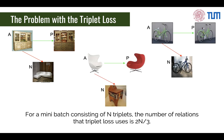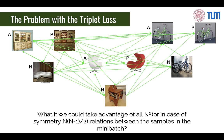When we generalize to n triplets, we see that the number of relations is 2n divided by 3. This is a bit problematic, because not all the information in the mini-batch is being used. In fact, in order to train a network with triplet loss, researchers need to consider things like doing intelligent sampling, hard negative mining, or multitask learning.